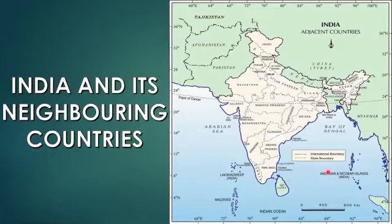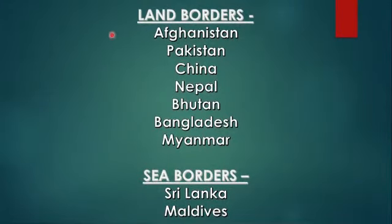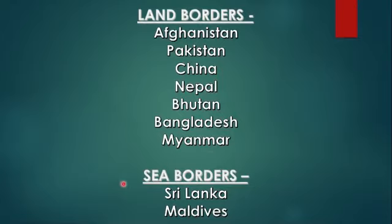So to recap, our seven land border neighbors are Afghanistan, Pakistan, China, Nepal, Bhutan, Bangladesh, and Myanmar. And we have two sea border neighbors: Sri Lanka and Maldives.